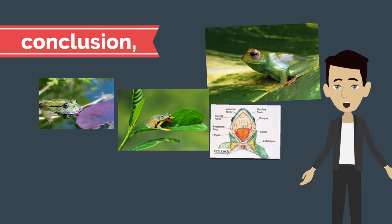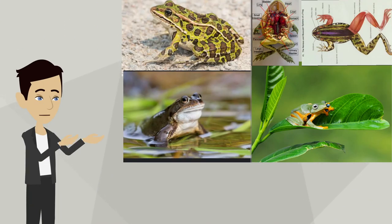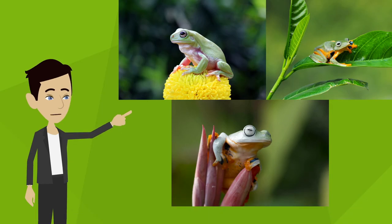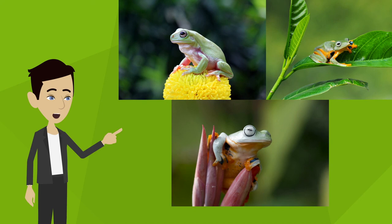In conclusion, frogs have a unique and adaptable respiratory system that allows them to survive both on land and in water. They are able to breathe through their skin, lungs, and buccal pumping. This allows them to extract oxygen from the air and from water. This adaptation allows them to survive in a variety of environments and is a testament to the incredible adaptability of these fascinating creatures.